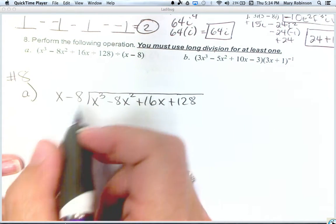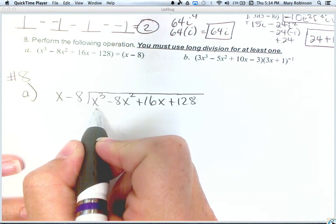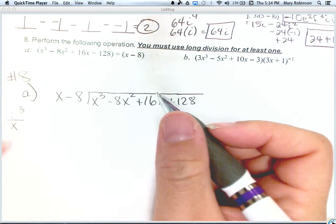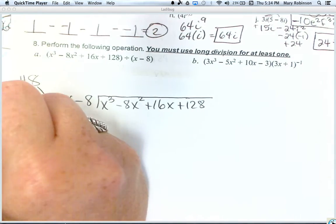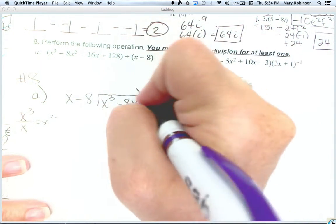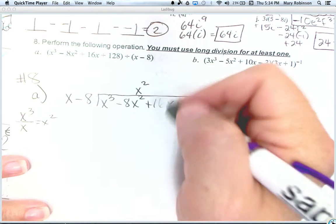So to get started, remember we always take the first term in the dividend and divide by the first term in the divisor. So if you take x cubed and divide by x, we get x squared. That x squared gets lined up over our like term x squared.